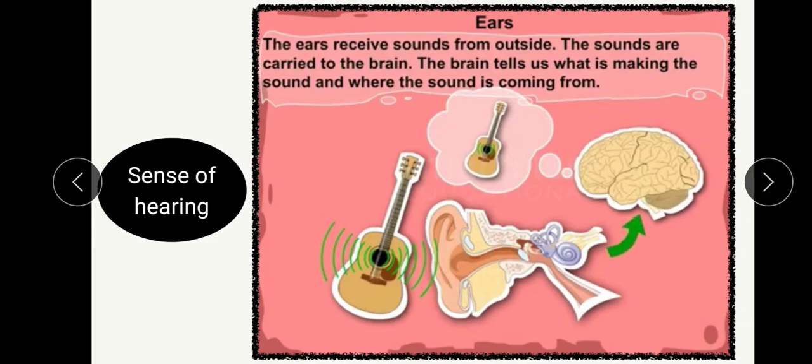The sound waves are taken by the inner ear and reach different parts of the ear. Finally, the nerves take the information from the sense organ ears and send it to the brain. The brain interprets the sound - knowing what is making the sound and where it is coming from. This is how the sense organ ears and the sense of hearing work.